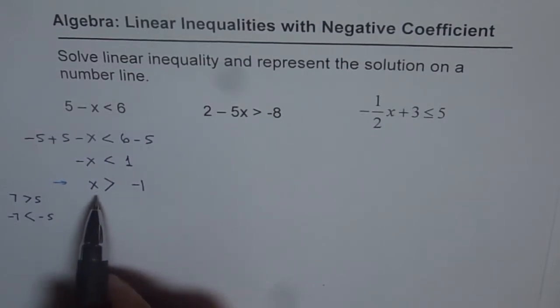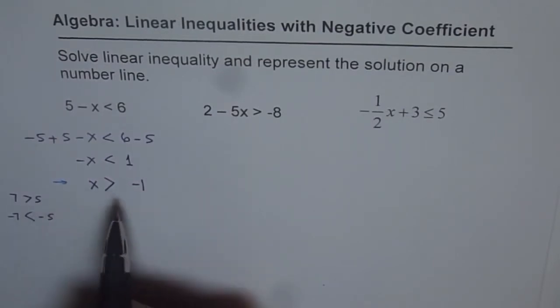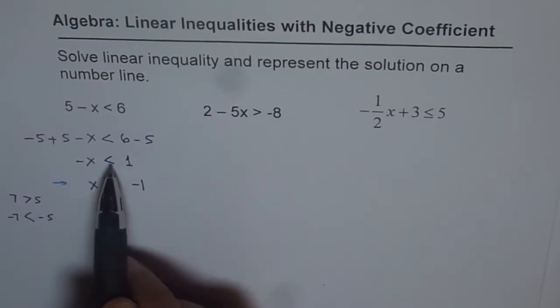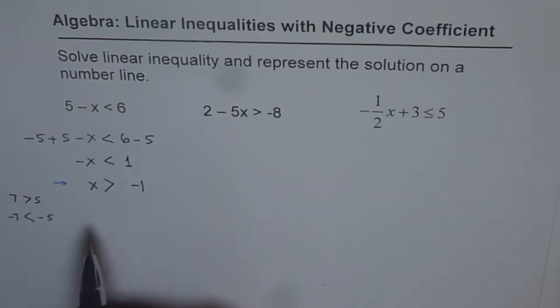So the solution here is that x is greater than minus 1. Do you see that? That is how it differs from the previous set of videos. So here, since you are multiplying by a negative number, the sign reverses.